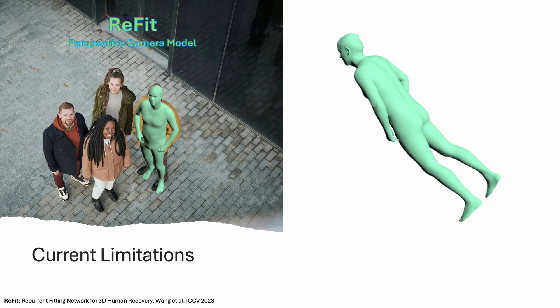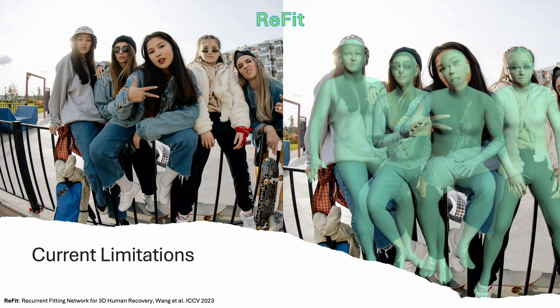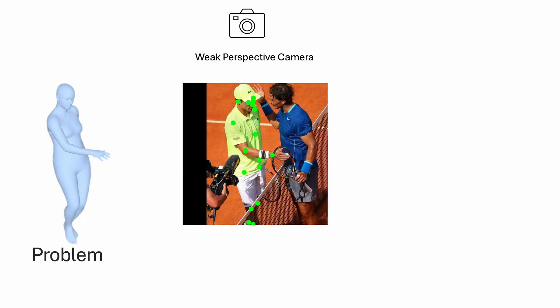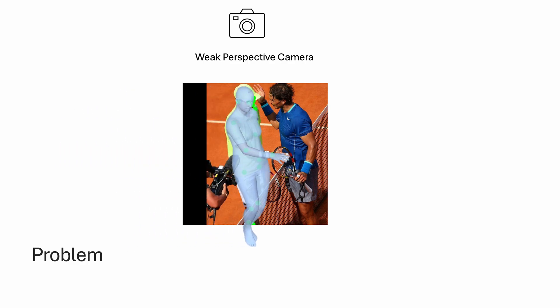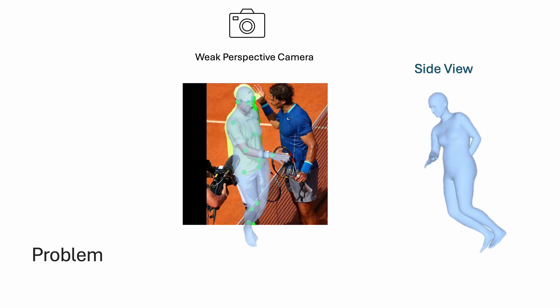Recent efforts have been made to use perspective camera models during training, which generate more plausible 3D poses. However, they often suffer from misalignment in 2D due to the use of incorrect camera intrinsics during inference. One major issue is that the pseudo-ground truth data used to train these models are generated by fitting 3D bodies to sparse 2D keypoints. Accurately fitting to 2D keypoints with the wrong camera can generate hard-to-detect, implausible poses in 3D.